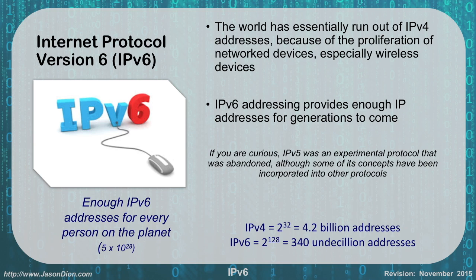So IPv6 was introduced, which addressed the problem of having enough IP addresses for generations to come by going from a 32-bit address to a 128-bit address. If you do 2 to the 128th, you get 340 undecillion addresses, which works out to every person on the planet having 5 times 10 to the 28th IP addresses. So we should never run out again.